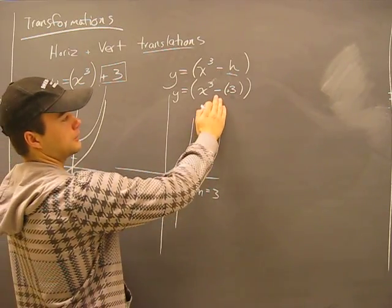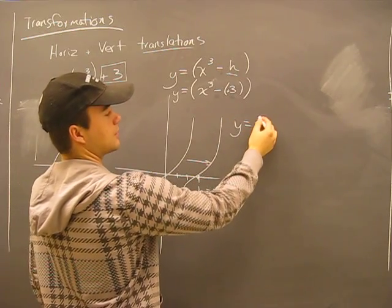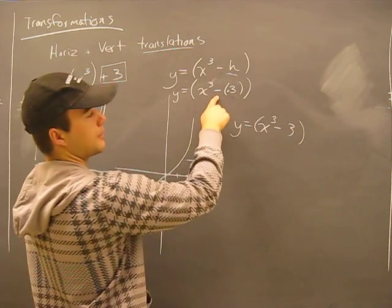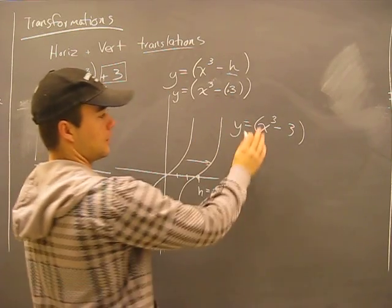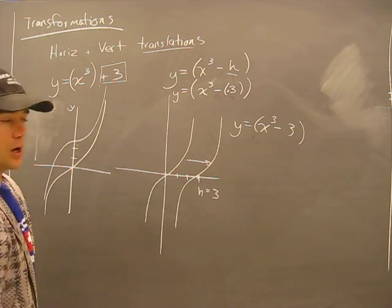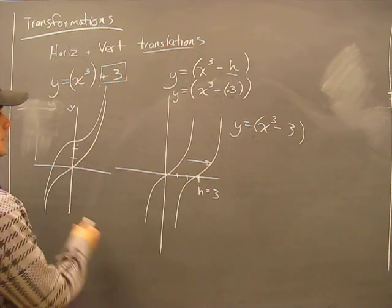When it moves right, ultimately your end equation will have a negative sign there, because I'm subtracting a positive sign. So that's that equation. So what if we did a combination of both? It's quite easy.